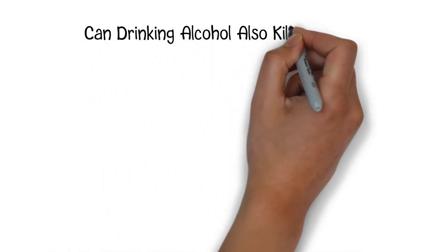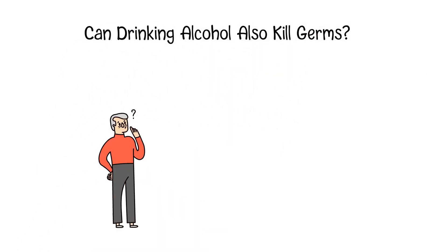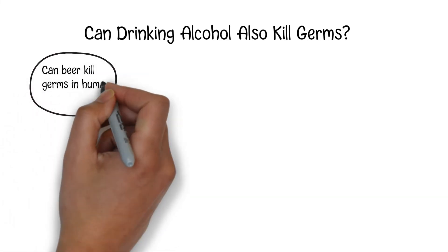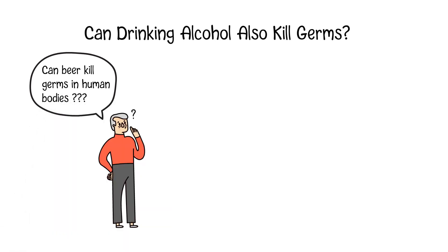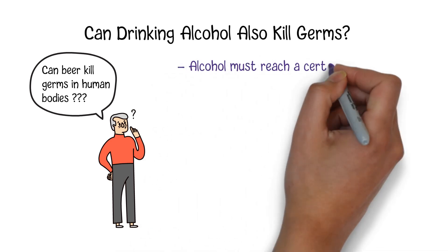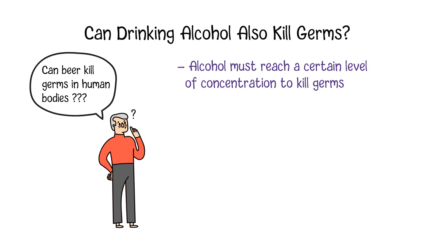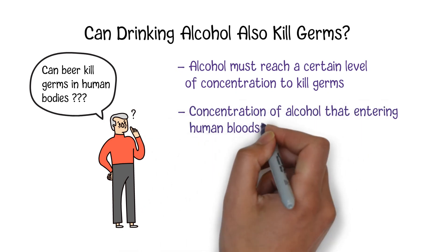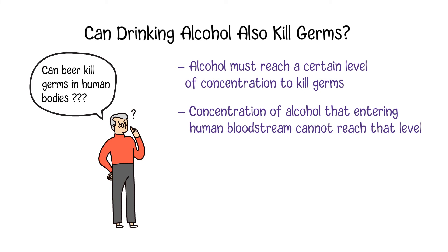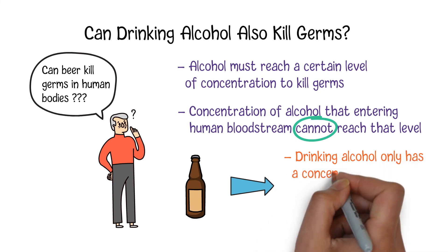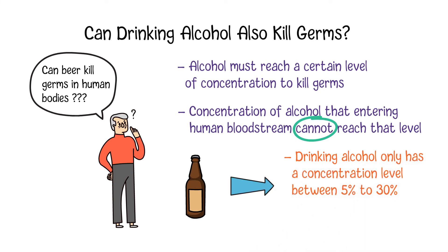Since alcohol in disinfectants has the same chemical structure as drinking alcohol, you may wonder why alcoholic beverages such as beers, wines, or spirits cannot be used to kill germs in human bodies. The main reason is that alcohol must reach a certain concentration level to kill germs. However, after drinking, the concentration of alcohol that actually enters your bloodstream cannot reach that level. In fact, most drinking alcohol only has a concentration between 5% and 30%, so it cannot even be used to kill germs on human skin.